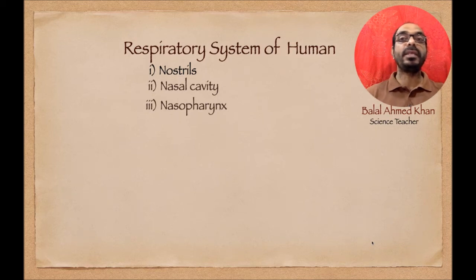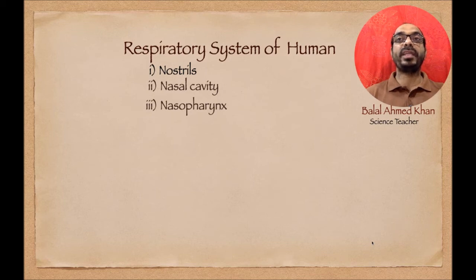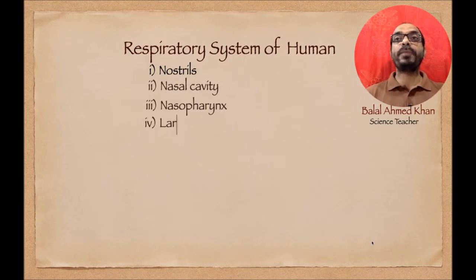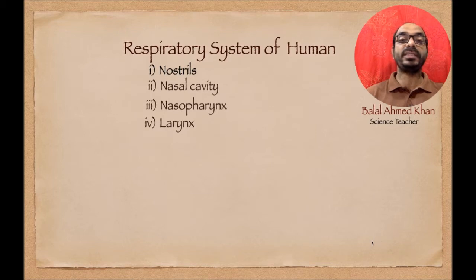The third part is the nasopharynx. The pharynx is the common part of the digestive system and respiratory system, known as the nasopharynx. With the help of the pharynx, exchange of gaseous substances occurs from the nostril to the trachea and larynx.